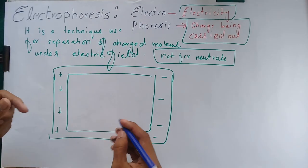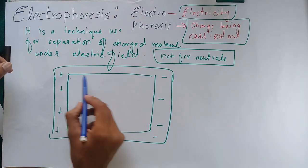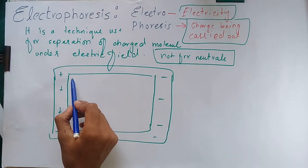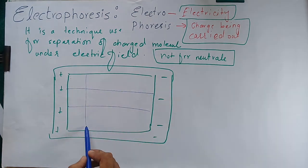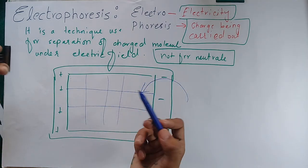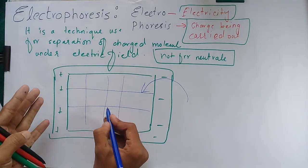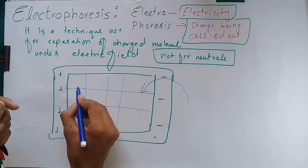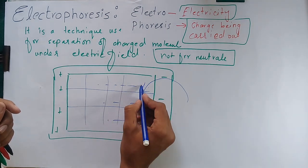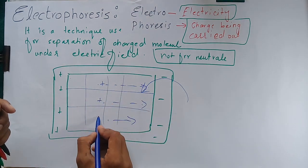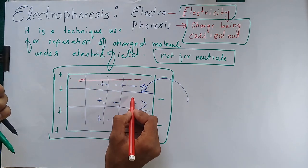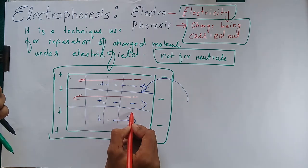When we place a gel in this fluid and apply the electric field, if we use a positively charged molecule it will move toward the negative electrode, and if we use a negatively charged molecule, that molecule will be attracted to the positive electrode.